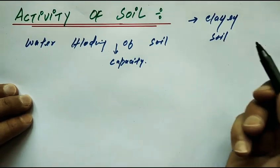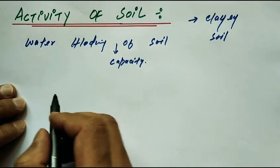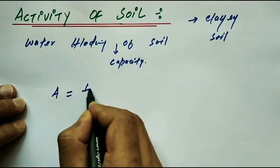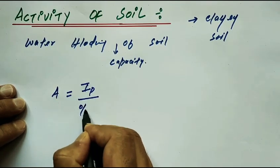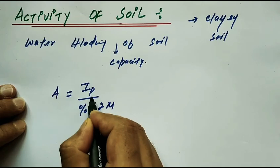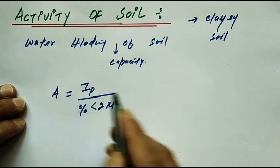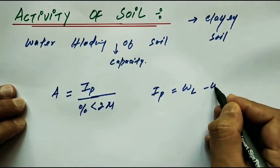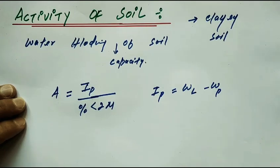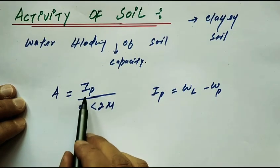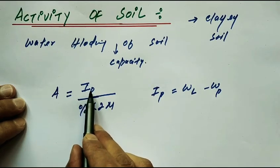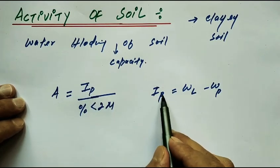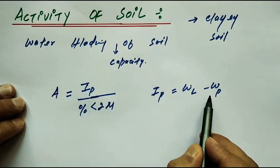Clay soil has particle size less than 2 micron. The formula for activity is: Activity (A) = IP divided by percentage less than 2 micron. IP is the plasticity index, which is equal to the liquid limit minus the plastic limit.